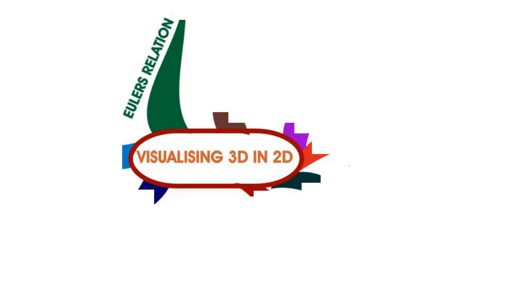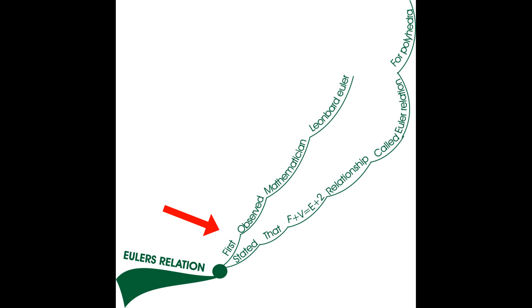Our seventh branch is about Euler's relation. The relation was first observed by mathematician Leonhard Euler. He stated that F plus V equals E plus 2. This relationship is called Euler's relation for polyhedra.